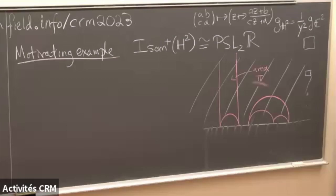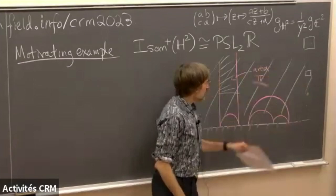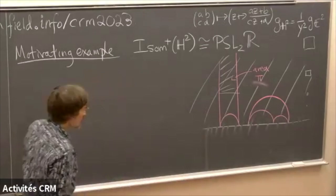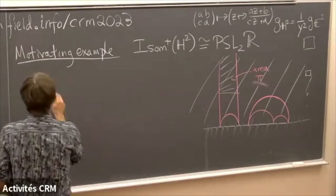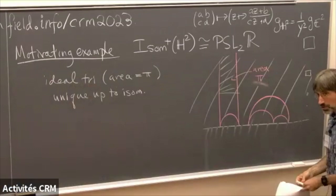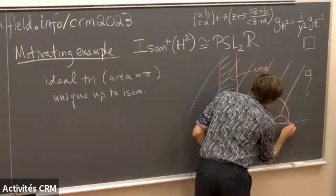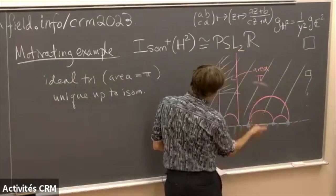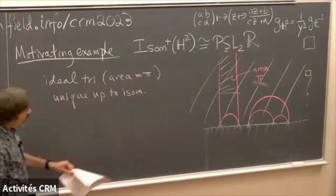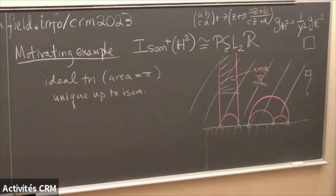The area is exactly pi — you can do the integral, but the easy thing to see is just that it's finite. Any triangle contained inside the ideal one has less area. And actually, up to isometry there's only one ideal triangle. If you don't know facts about Möbius transformations: for a Möbius transformation you can take any three points to any other three points, so there's a unique Möbius transformation taking the three ideal vertices to any other three points. That transforms one ideal triangle into another, so there's just one up to isometry.